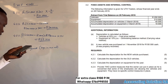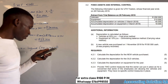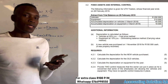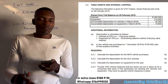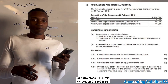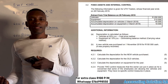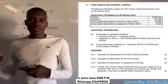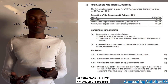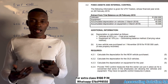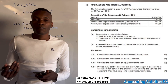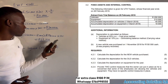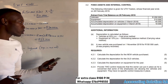Control measure number two: store the vehicle and equipment in a safe place. We must make sure there is proper parking for vehicles, and that equipment is stored securely so no one can steal it. These measures help ensure good internal control in the business.